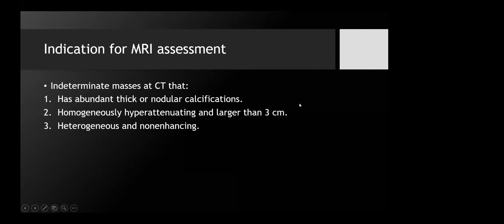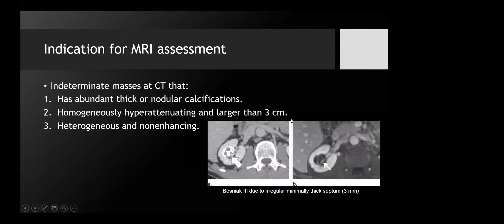The indications for MRI are: first, if the lesion on CT has abundant thick or nodular calcification — as in the case brought at the beginning — MRI should be used. Here the lesion has a minimally thickened septum measuring three millimeters — Bosniak 3. Second, a homogeneously hyperattenuating lesion larger than three centimeters. Third, heterogeneous non-enhancing lesions should also be evaluated by MRI.